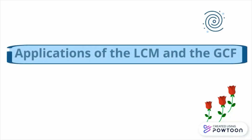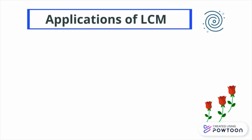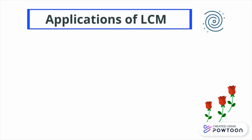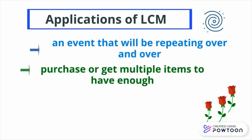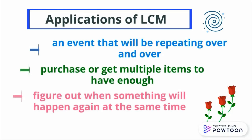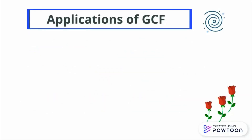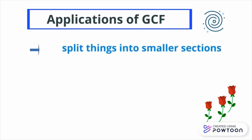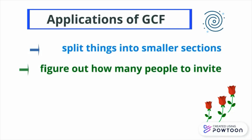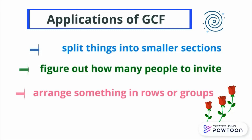Let us have a recap of the uses and applications of LCM and GCF. Key ideas for LCM: first, an event that will be repeating over and over; second, purchase or get multiple items to have enough; third, figure out when something will happen again at the same time. Key ideas for GCF: first, split things into smaller sections; second, figure out how many people to invite; third, arrange something in rows or groups.